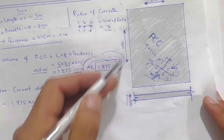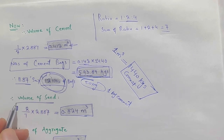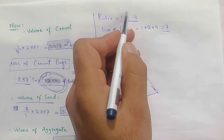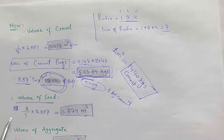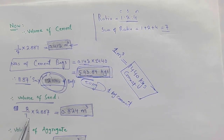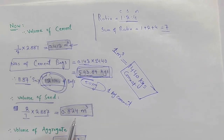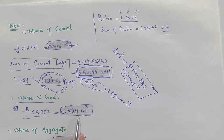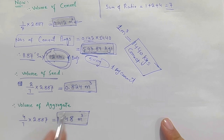Now we require the volume of sand. Sand is 2 parts, so 2 divided by 7, multiplied by the dry volume of 2.887. When you do the multiplication, we get 0.824 cubic meter as the volume of sand required.